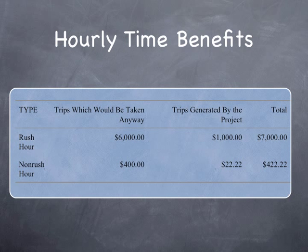This gives you the hourly time benefits for the old trips and for the new trips. Summing those up, you get $7,000 for the rush hour period and $422 for the non-rush hour trips for a given day.